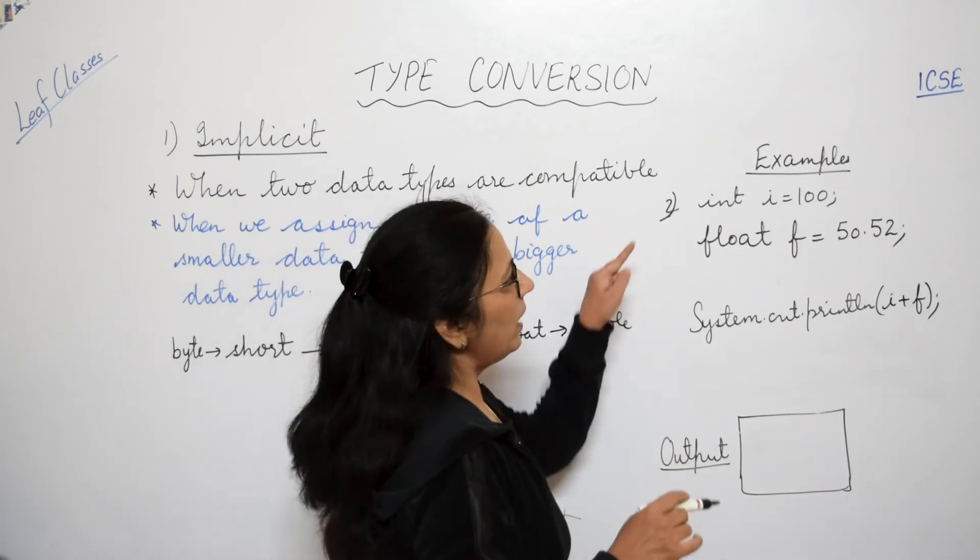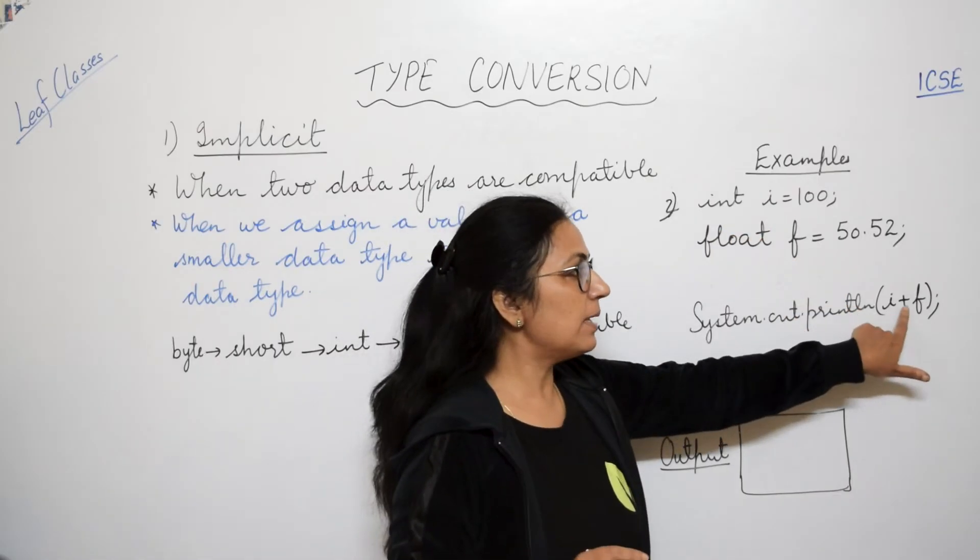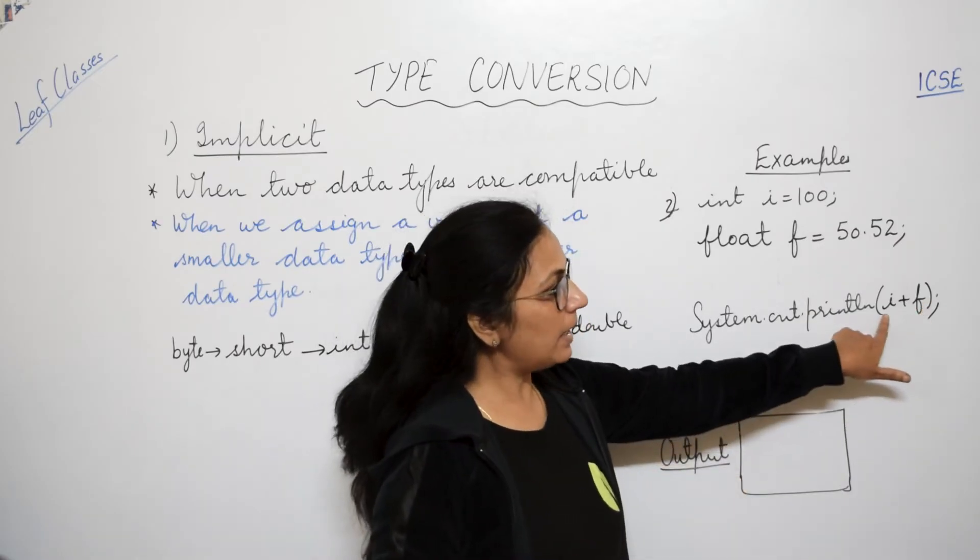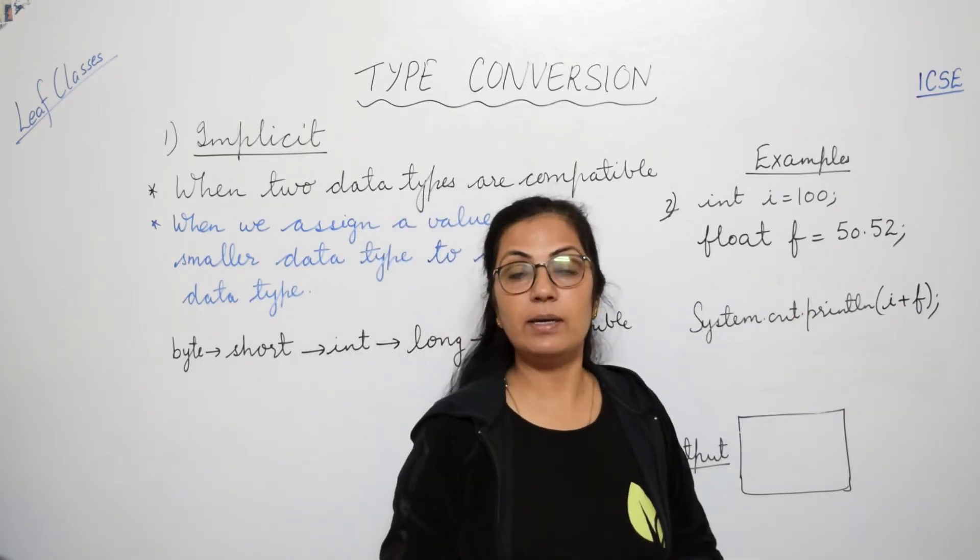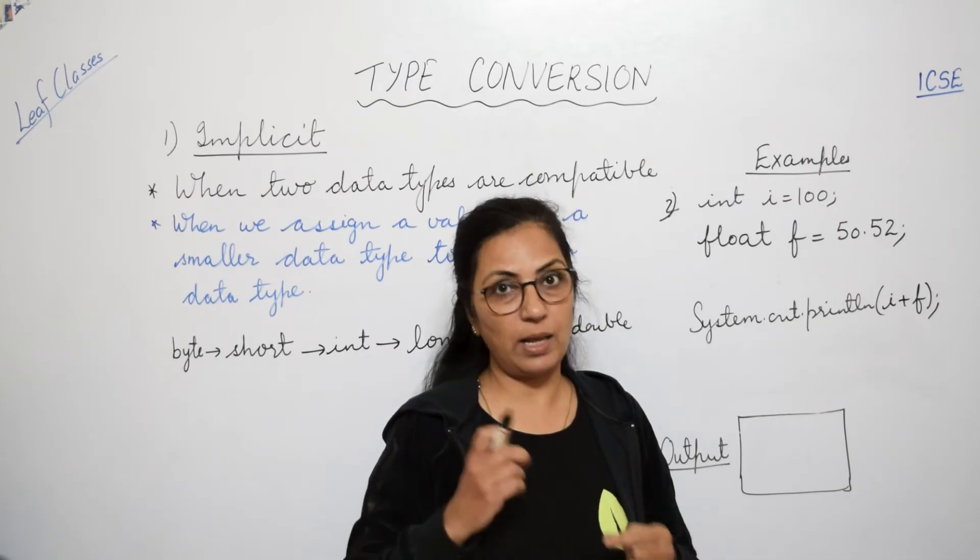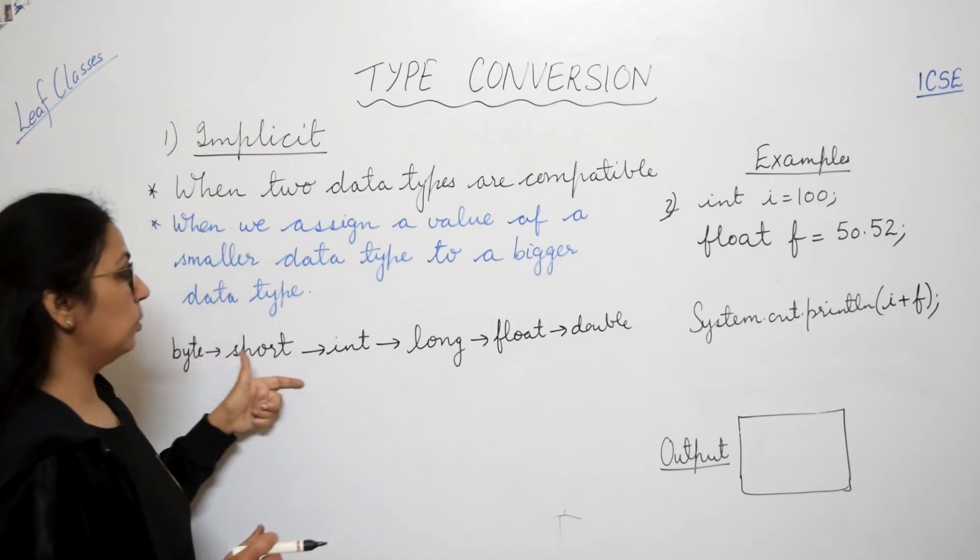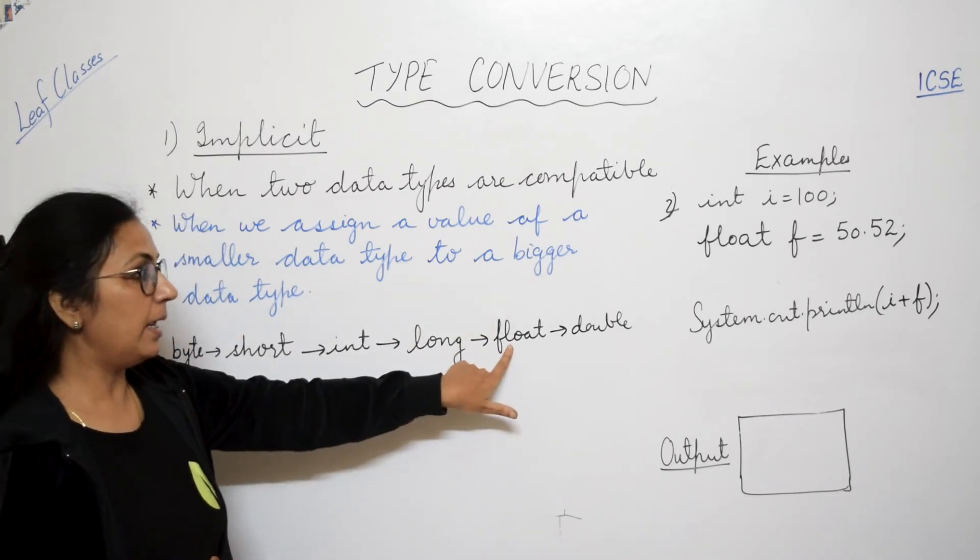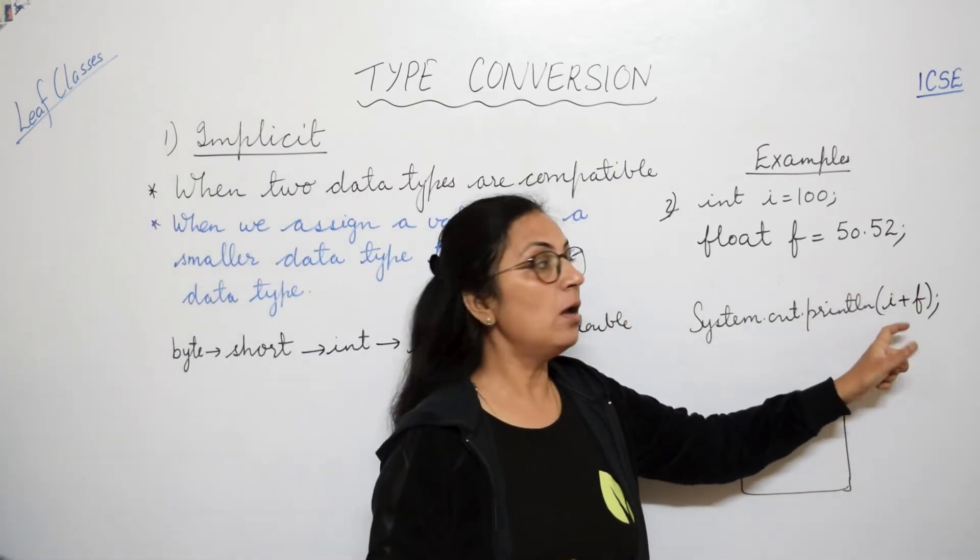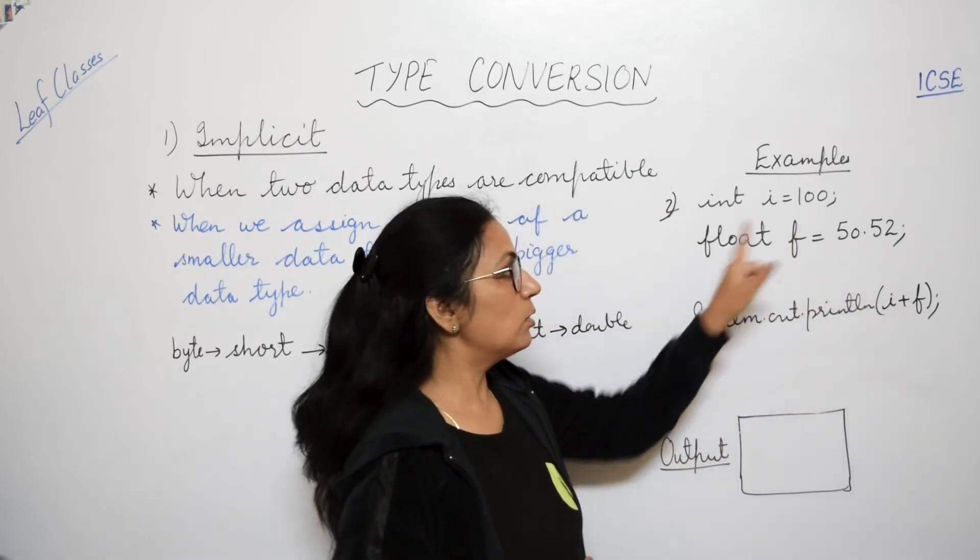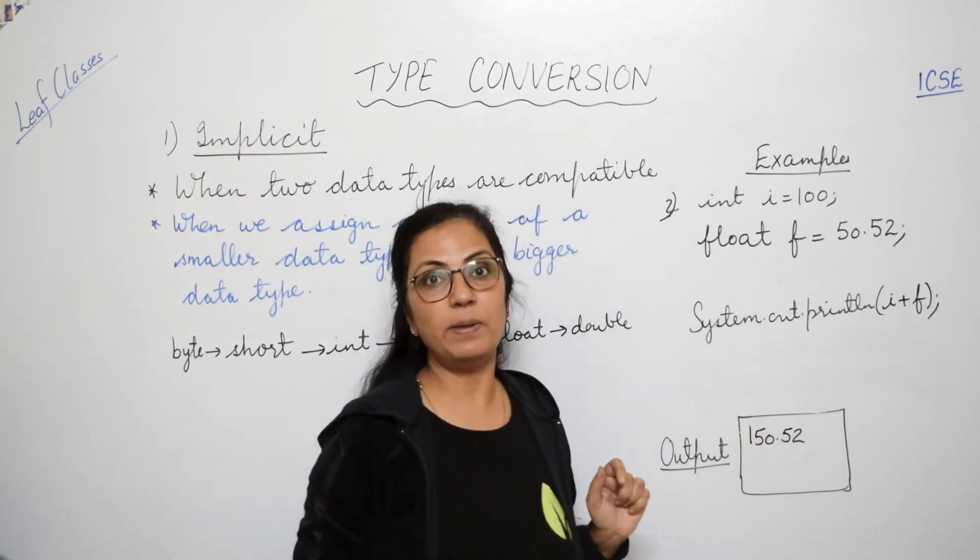We will see one more example. Now here, int i equals to 100, float f equals to 50.2, and print i plus f. Now in this i and f, when we are giving this as expression, now here one is int type and one is float type. So result toh ek type mein aega. Result toh do type mein toh nahi sakta hai. So kya hoga yaha par? According to this rule, float higher hai, int is at lower level. So hamesha jo resultant data type hoga, woh according to the higher data type hoga. So the answer will be 150.52. I hope it is clear to you.